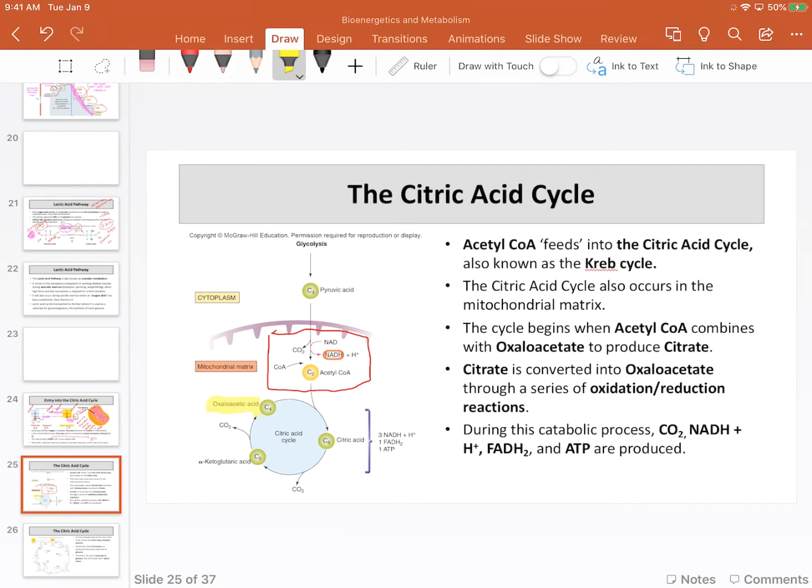Glucose was a six-carbon structure. Now we're back to a six-carbon structure. And that six-carbon structure is called citrate or citric acid.